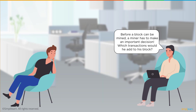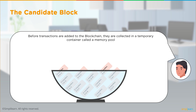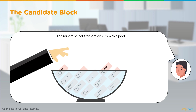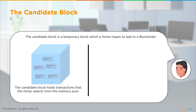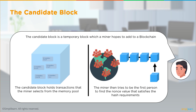Before a block can be mined, a miner has to make a very important decision: which transactions would be added to their block. Before transactions are added to the blockchain, they are collected in a temporary container called a memory pool. The miners select transactions from this pool and place them in a temporary block called a candidate block — a block the miner hopes to add to the blockchain. The miner then tries to be the first to find the nonce value that satisfies the hash requirements.